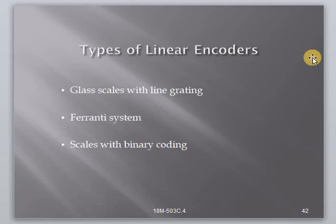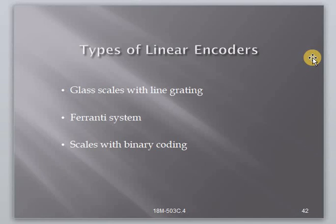A linear transducer is a device mounted on the machine table to measure the actual displacement of the slide, such that backlash of screws, motors, etc. would not cause any error in the feedback data. This device is considered to be the highest accuracy but also more expensive compared to other measuring devices mounted on screws or motors. The principles involved in these transducers are similar to that of rotary transducers, and these transducers measure the position of the slide directly — so they do not need high-position intermediate elements such as screw and nut gearing. Types include glass scales with grating line transducers and the Ferranti system. Thank you.